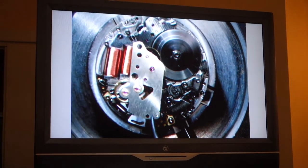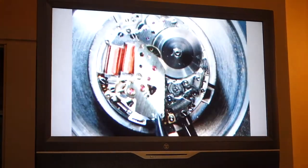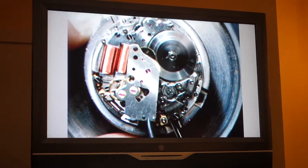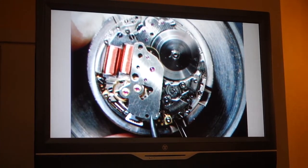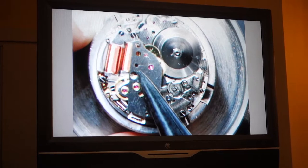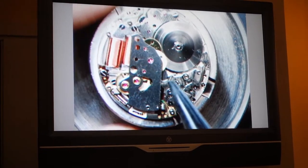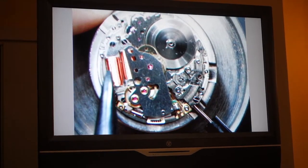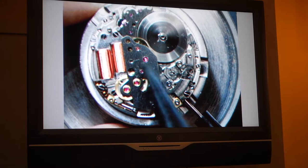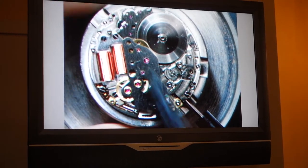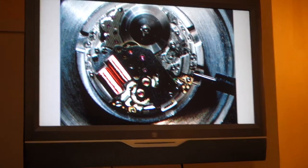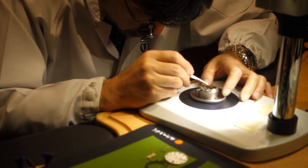So now we're going to set the train wheel bridge. And you can see that the red parts are ruby, which reduces friction at pivot points. So all the wheels have to match up. This takes a lot of skill and is very difficult to do.